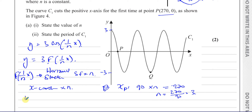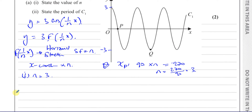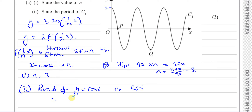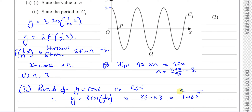So n equals 3 — that's the answer to part one. It's f(1/3 x), which is a stretch of factor 3. For part two, the period of the normal cosine function y equals cosine x is 360 degrees. Therefore the period of y equals 3 cosine(x/3) is 360 multiplied by 3, which is 1080 degrees. So n equals 3 and the period of the function is 1080 degrees — three times the normal period because it's stretched by a factor of 3.